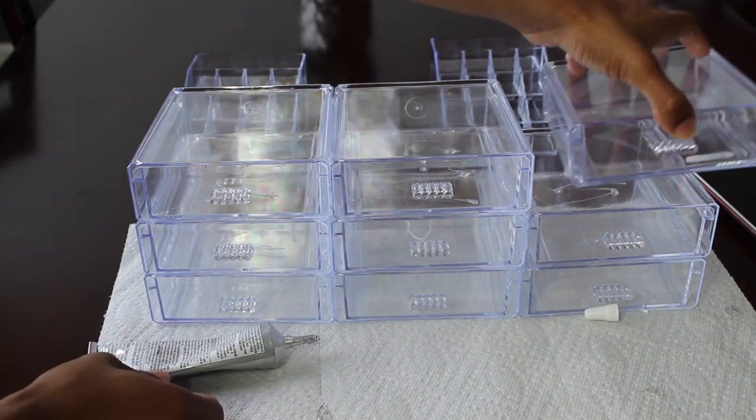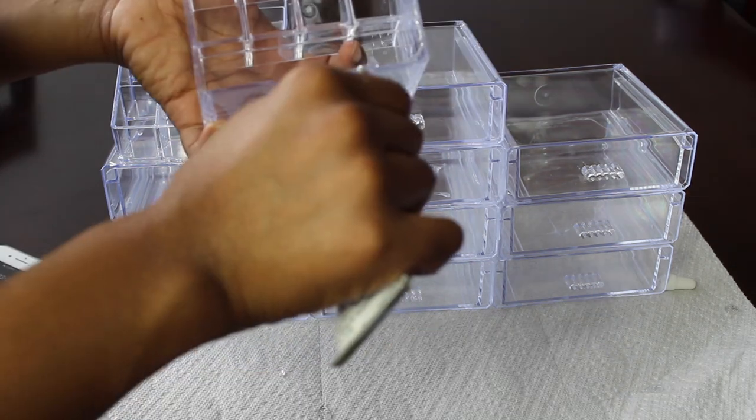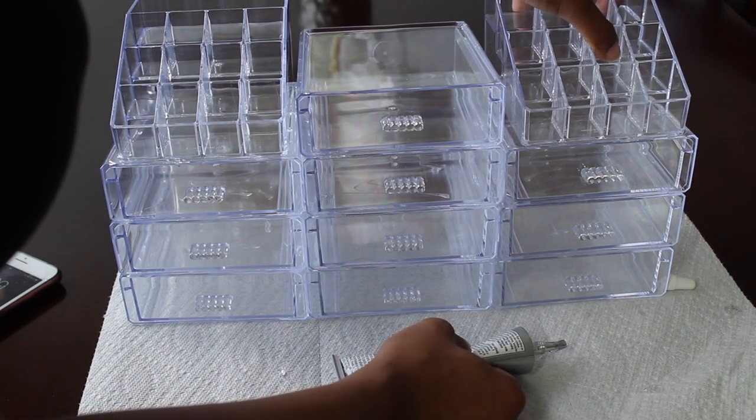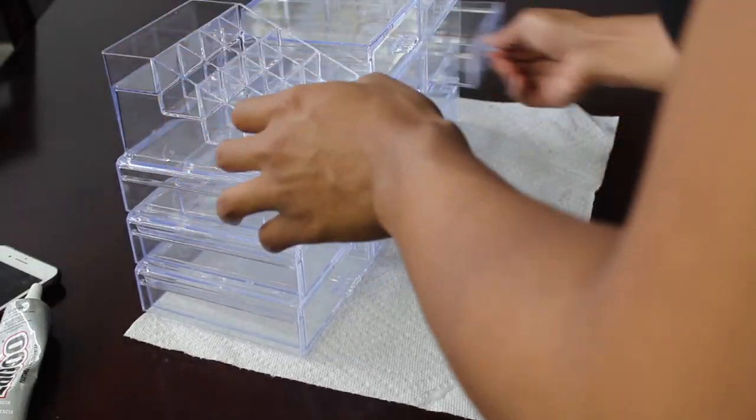As you can see, I just stuck the drawers on top of each other in the exact same way I laid them out. The drawers were really easy to open and I put the two lipstick organizers beside it.